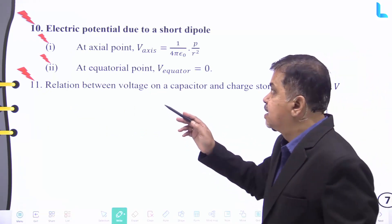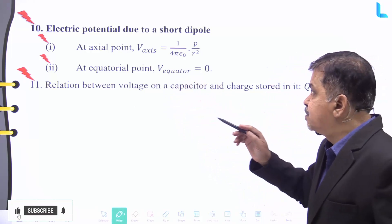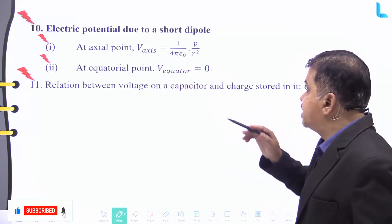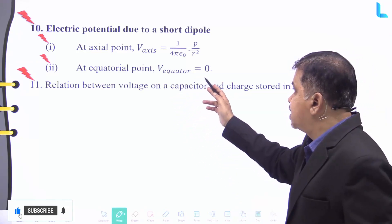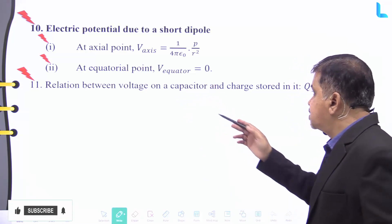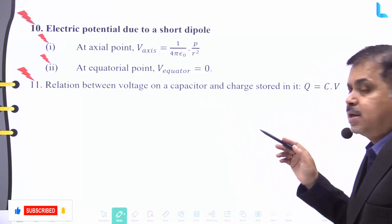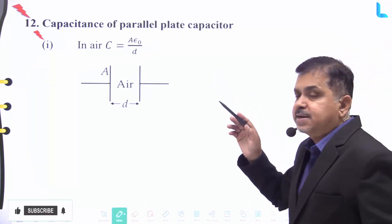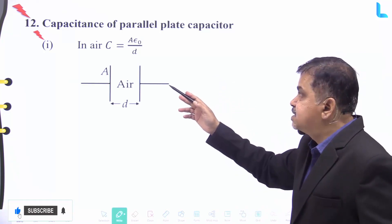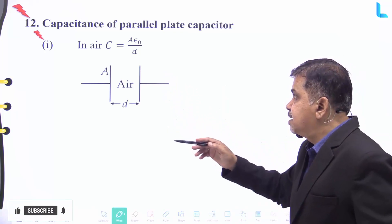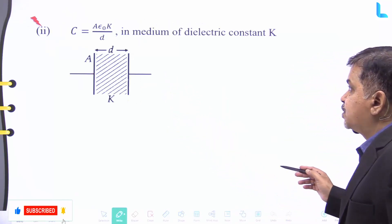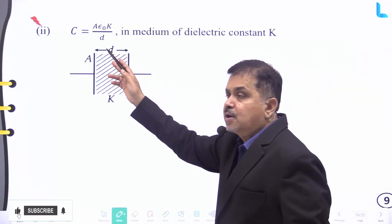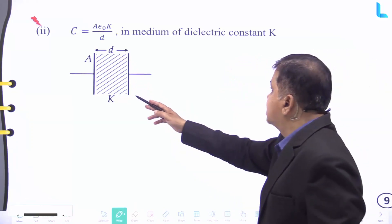Point number ten: the electric potential due to a short dipole — at the axial point, V_axial = (1/4πε₀)·(p/r²); at the equatorial point, V = 0. The relation between voltage on a capacitor and the charge stored is Q = CV. Number twelve: the capacitance of a parallel plate capacitor is C = ε₀·A/d, and in a medium of dielectric constant k it is C = ε₀·k·A/d.